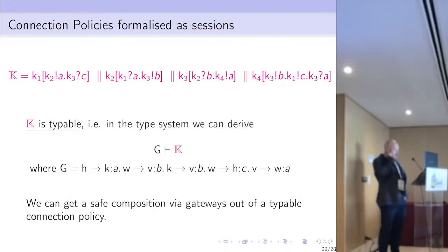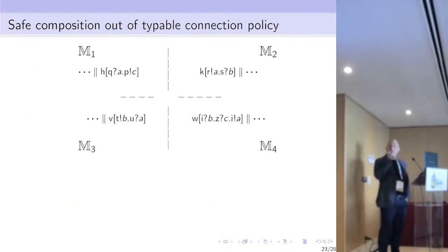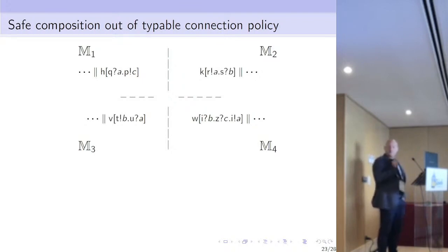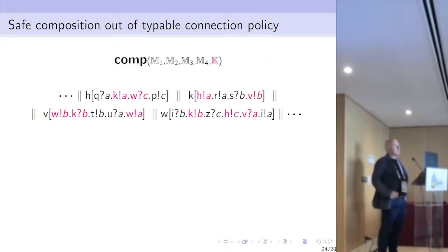The main result is that we can get a safe composition via gateways out of a typeable connection policy — this is our notion of multi-compatibility. So if you take a set of systems, pick a participant from each to act as a possible interface and replace it with forwarders, and manage to find a connection policy between the interfaces that can be typed, then out of that you can get a safe composition.